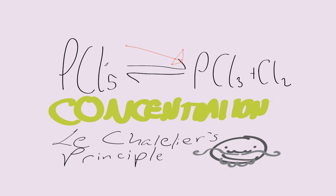For example, in this equation, if the concentration of PCl3 increases, the equilibrium shifts to the left in order to reduce the concentration, and vice versa, PCl5 being increased.